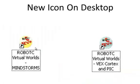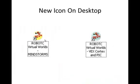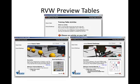Depending upon which version of the software that you've selected — either Mindstorms or VEX Cortex — you will have a new icon that will pop up on your desktop. The software that you just installed has two Robot Virtual World games already in it: one is called the Grand Challenge and the other is called the Classic Table. Both of these are more difficult than what we want to start with. We're going to start with something that's very, very simple.